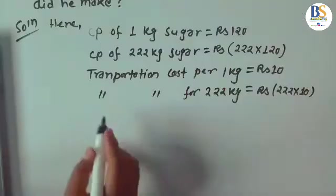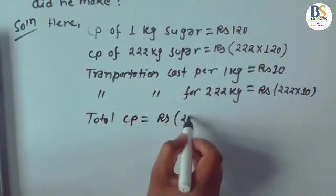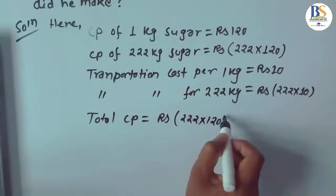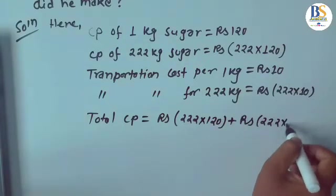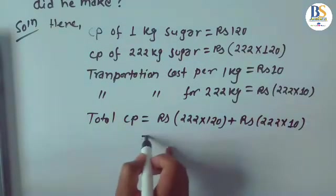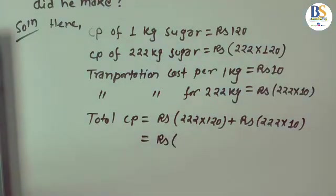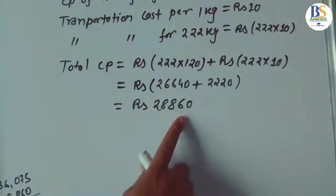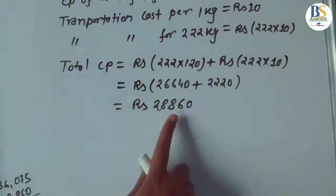CP of 1 kg sugar is RS 120, so CP of 222 kg is RS 222 × 120. Transportation cost for 222 kg is RS 222 × 10. Total CP = RS 222 × 120 + RS 222 × 10 = RS 26,640 + RS 2,220 = RS 28,860. Total SP is given as RS 36,075. Clearly SP is bigger than CP, so there is profit.